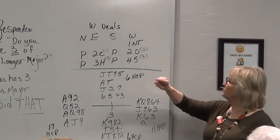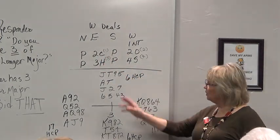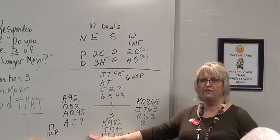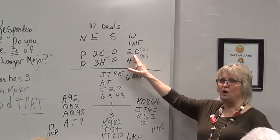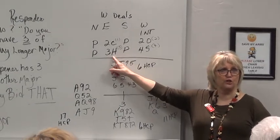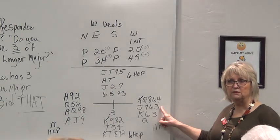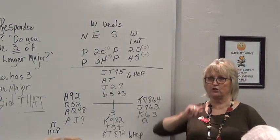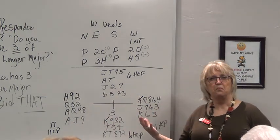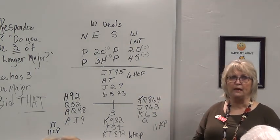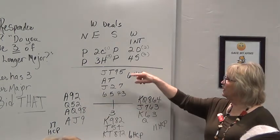And the responder has 11 high card points and a classic shape. Five of one and four of the other. But he starts with two clubs. Two clubs. That's Stayman. If his partner, look at his partner over here. Does he have four of either major? Nope. So he denies it by saying two diamonds. When the responder says three hearts, that's the shorter one. That's the one he owns four of. That's the point where the opener says alert. And he says to the opener, I've got five of the others. If you have three, let's play that one. Guess what? He has three.